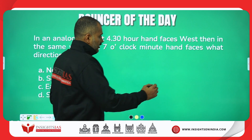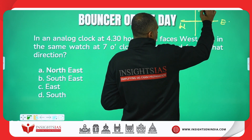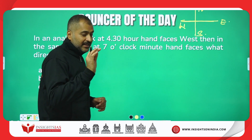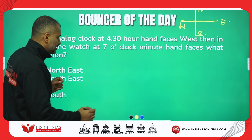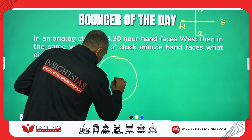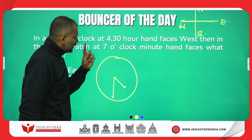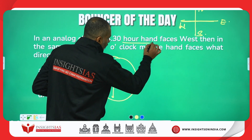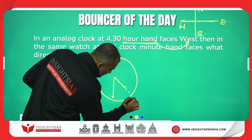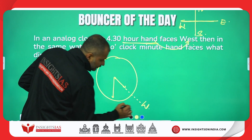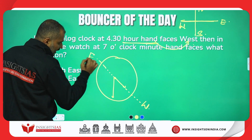The standard directions are east, west, north, and south, but new references have been given. In an analog clock at 4:30, the hand is facing west. I am drawing a clock — approximately 4:30 looks like this. At 4:30, the hand is facing west. If I draw an imaginary line, anything opposite to west is east.